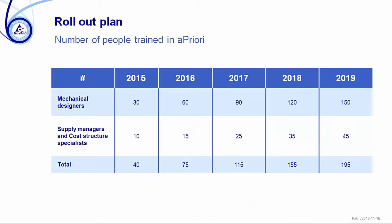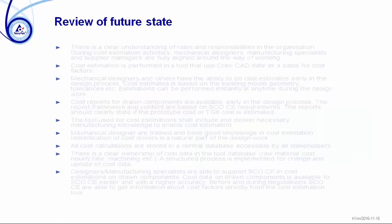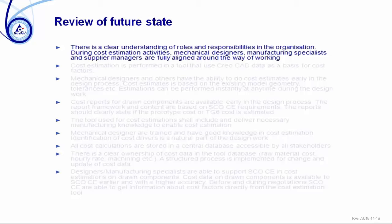We have a rollout plan where mechanical designers and supplier managers will be trained. We are closing to the end of 2016 and up to today we have 65 trained users, with another 10 before year end — so we're spot on the plan with 75 users by the end of this year. Most of the trained people are mechanical designers, and the supply chain participants will come next year. A required future state is that there is a clear understanding of roles and responsibilities in the organization, and during cost estimation activities, mechanical designers, manufacturing specialists, and supplier managers are fully aligned around the way of working.